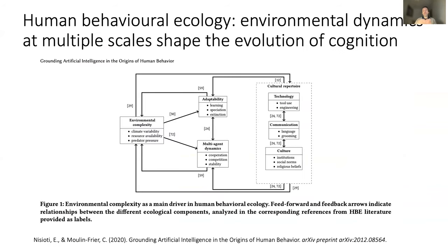There is an emerging scientific domain called human behavioral ecology that studies how this kind of environmental dynamics at multiple scales — from phylogenetic to cultural to ontogenetic — can shape the evolution of cognition and intelligence. There is a great paper from Eleni Nisioti and Clément Moulin-Frier which makes a short review of this field and proposes a number of directions to leverage this perspective in artificial intelligence. I really recommend you read that paper.